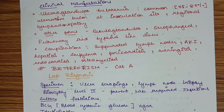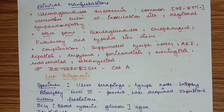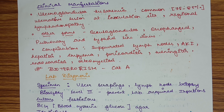Other forms seen may be oculoglandular tularemia, where the eyes are affected; oropharyngeal, where the oropharynx is affected; pulmonary; and typhoid-like illness.